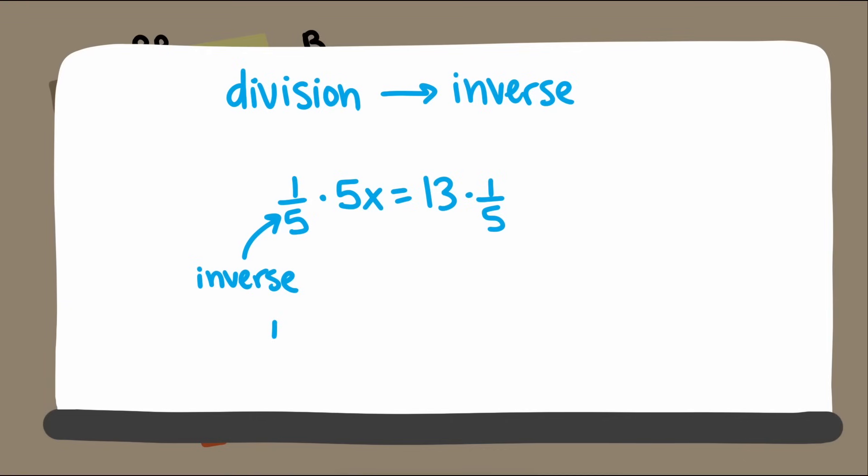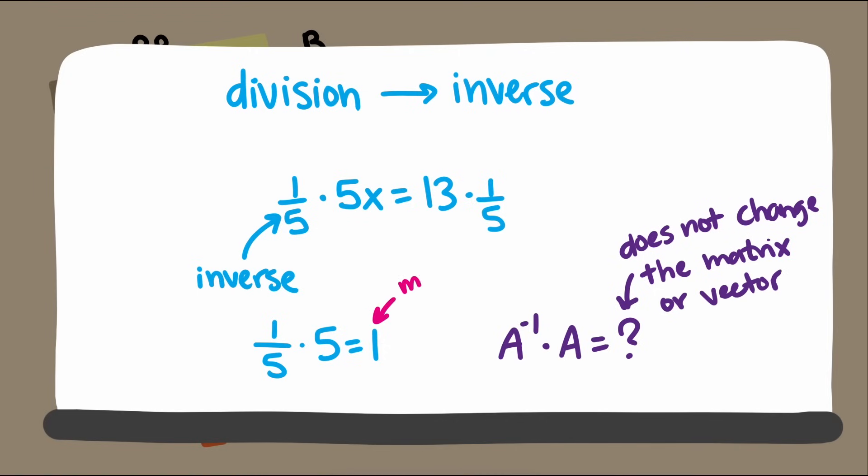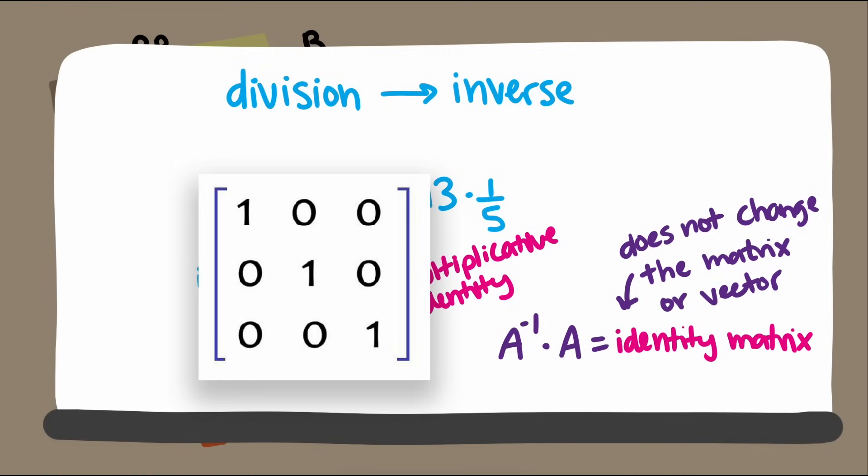If 5 times 1 fifth equals 1, what would a matrix and a matrix inverse multiply to? It needs to be a matrix that would not change the vector or matrix it is multiplying. In the same way that multiplication by 1 does not change the value of the number, which is why 1 is called the multiplicative identity. The corresponding matrix is what we call the identity matrix and is a square matrix with ones on the diagonal and zeros everywhere else.